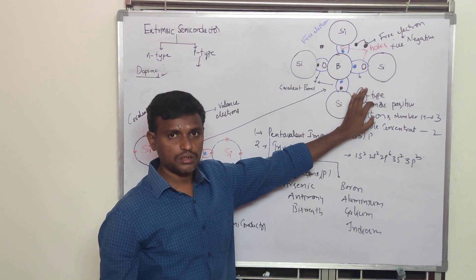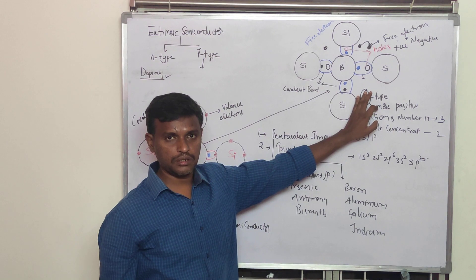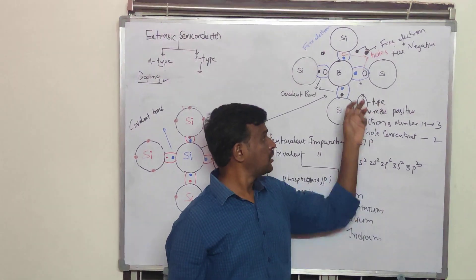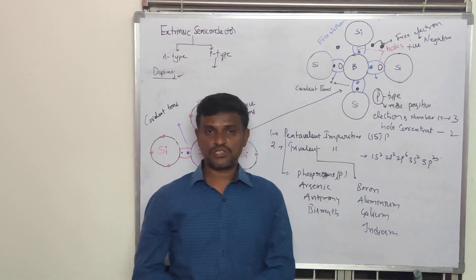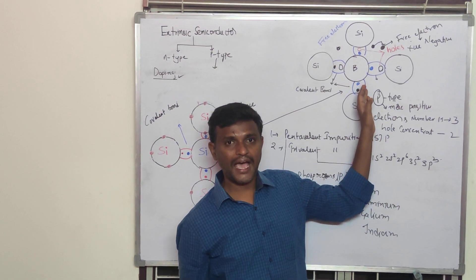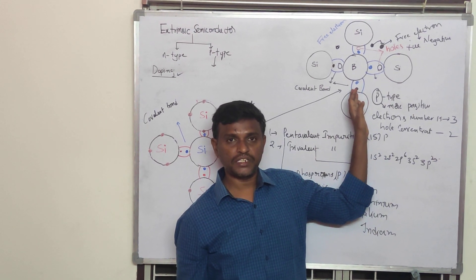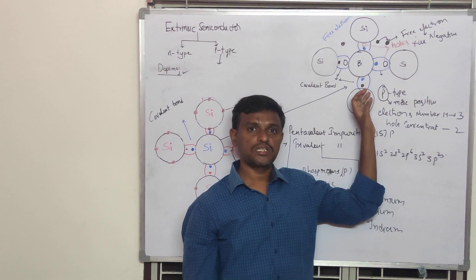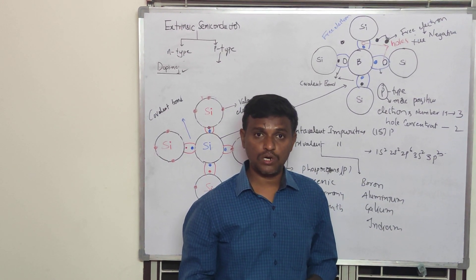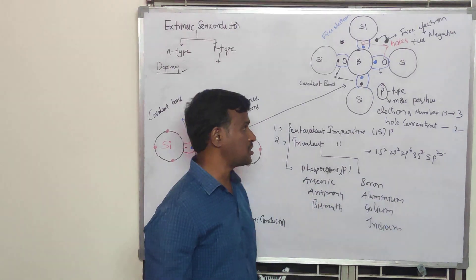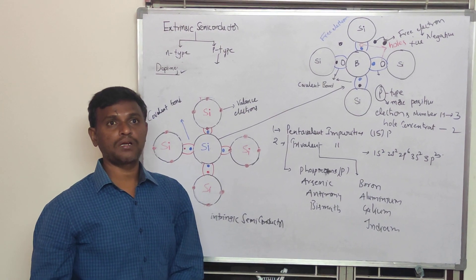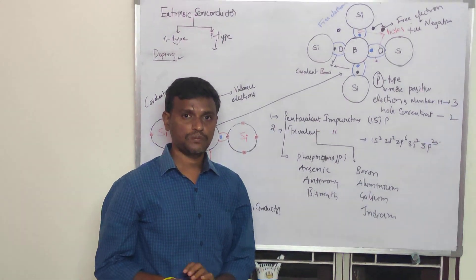In conclusion, in P-type semiconductor the majority carriers are holes and minority carriers are electrons. The trivalent atoms are called acceptor atoms because they are ready to accept an electron to complete their stable configuration. This is about the extrinsic semiconductor and the formation of N-type and P-type semiconductors. Thank you.